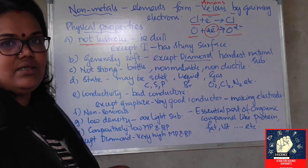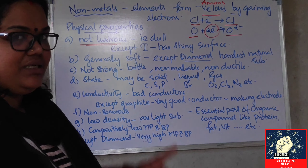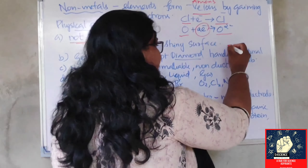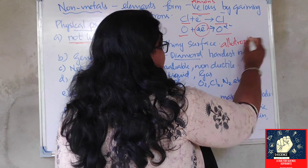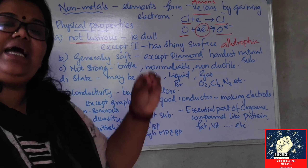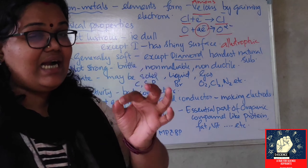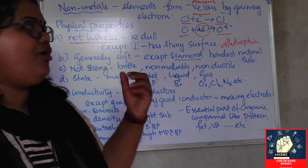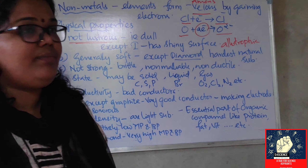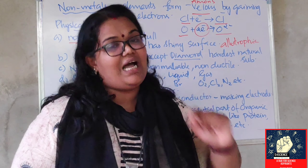What about hardness? Nonmetals are generally soft. But there is an exception — an allotropic form of carbon. Carbon has different forms: one is diamond, one is graphite. Diamond is the hardest natural substance. So generally nonmetals are soft in nature, but carbon's allotropic form diamond is the hardest natural substance.